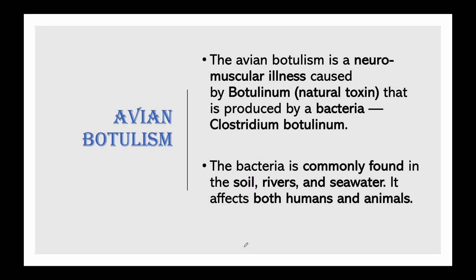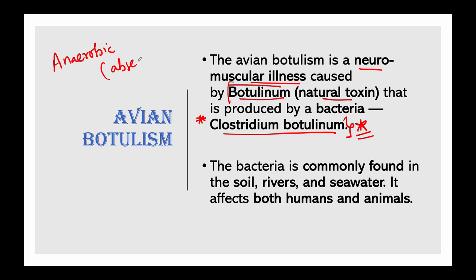Avian botulism is a neuromuscular illness caused by botulinum, the natural toxin produced by a bacteria named Clostridium botulinum — this is very important. This bacteria requires anaerobic conditions, meaning the absence of oxygen. These bacteria also do not grow in acidic conditions.